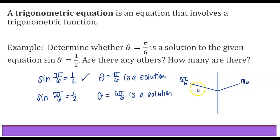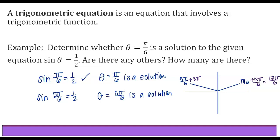But that's not the only additional answer. Those are the two answers on 0 to 2 pi, but if we aren't given a restriction there are technically infinitely many solutions because we can continue to add 2 pi to each of these to find coterminal angles. For example, adding 2 pi to pi over 6 gives 13 pi over 6, and adding 2 pi to 5 pi over 6 gives 17 pi over 6. We could just continue to add and subtract copies of 2 pi, giving us infinitely many solutions.